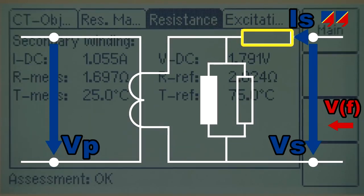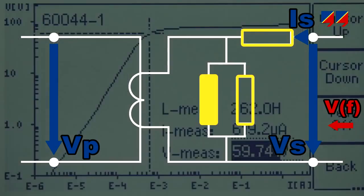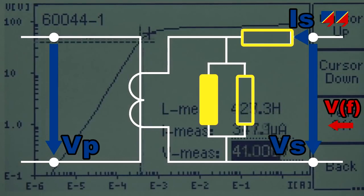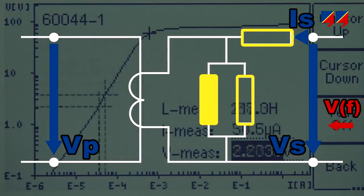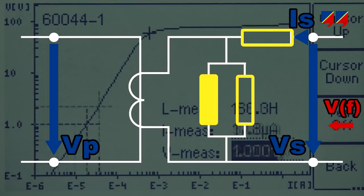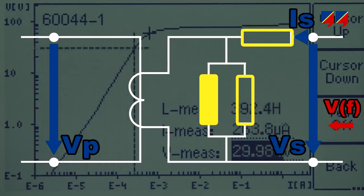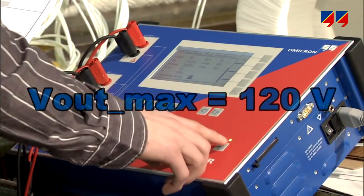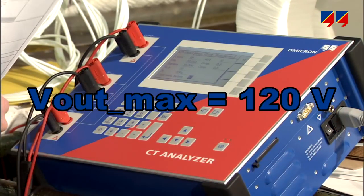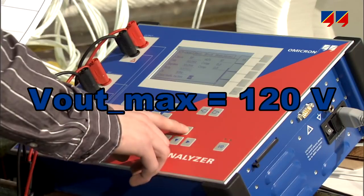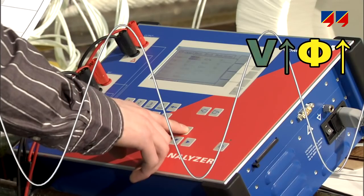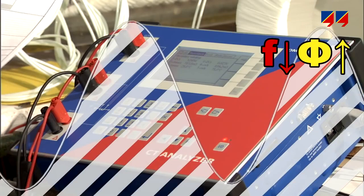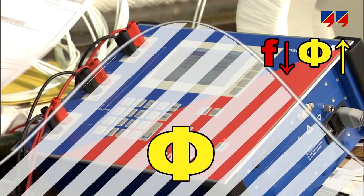First, it measures the DC resistance of the CT's secondary winding. Then, knowing the DC winding resistance and the corresponding voltage drop, it measures the excitation curve to determine the magnetic characteristic of the core. CT Analyzer performs the excitation curve measurement with safe low voltages of up to 120 volts, reducing the frequency instead of increasing the voltage if higher magnetic flux is required.